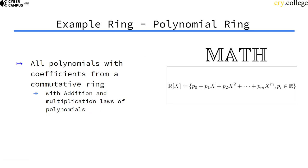A ring you maybe should have heard of is a polynomial ring. This is all polynomials with coefficients in a base ring. If you have a ring, and the elements of those rings form coefficients of polynomials, the set of all those polynomials also actually form a ring with the addition and multiplication laws of polynomials.